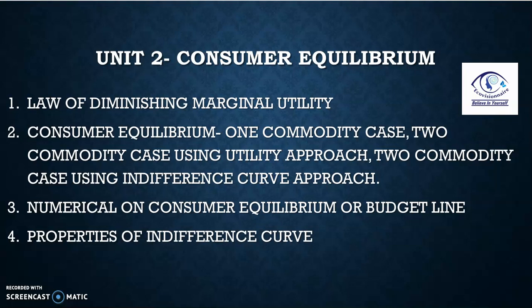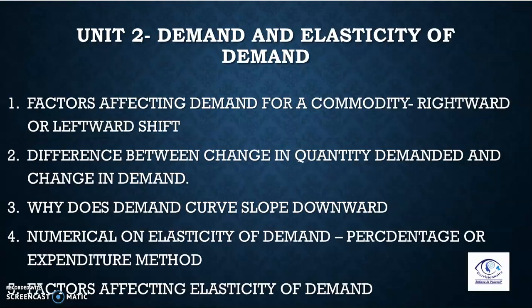Properties of indifference curve also have to be covered. There are four properties of the IC curve: it is downward sloping from left to right, it is convex to the origin, two ICs never intersect, and a higher IC shows a higher level of satisfaction.